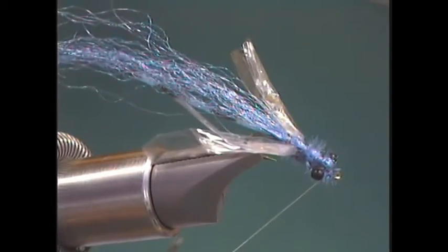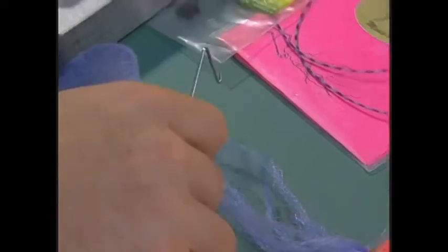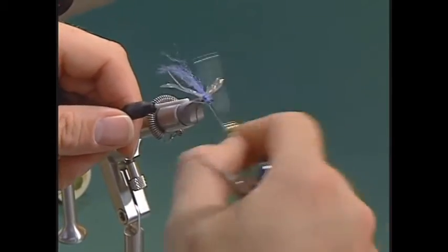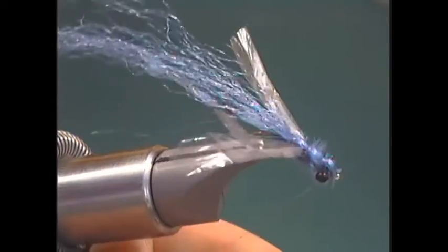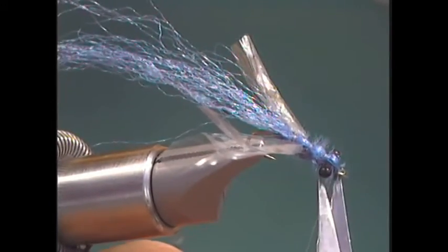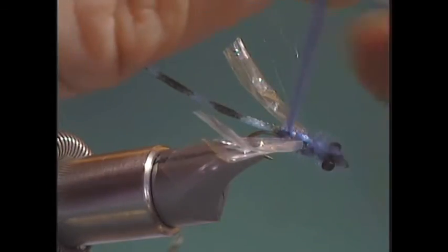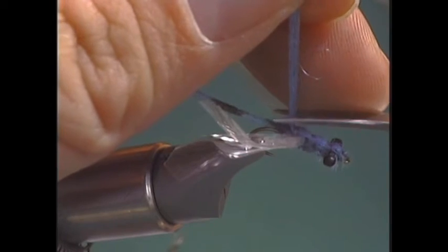Now I'm ready to whip finish it off. So I'll grab my whip finisher and tie it off. Trim off our thread. Then I'll pull up the remaining of this Zeelon and just trim it off.